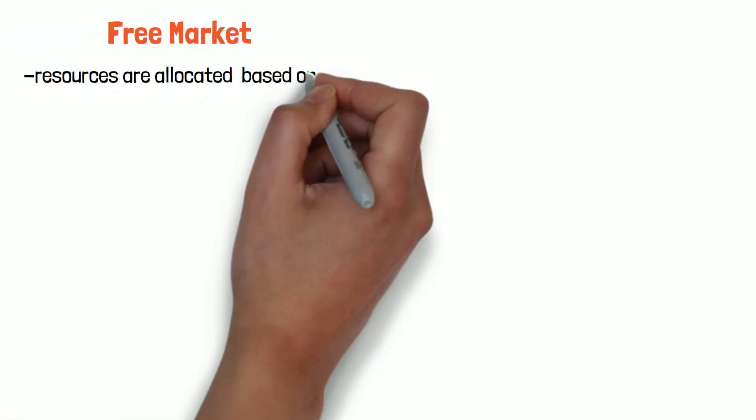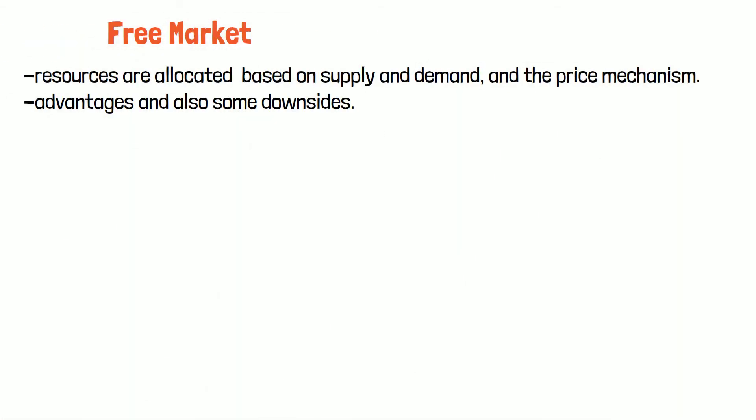A free market allocates resources based on supply and demand, and also the price mechanism. In other words, everything is for sale, since anything can be sold at any price that people will pay for it.